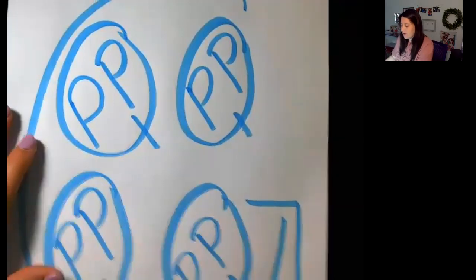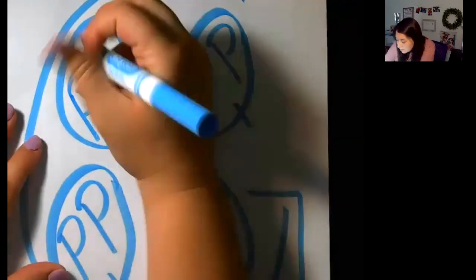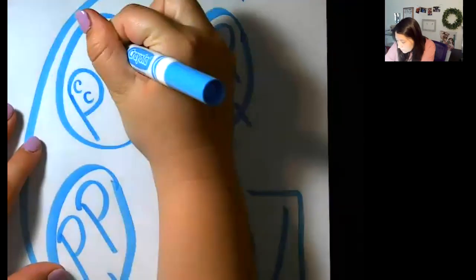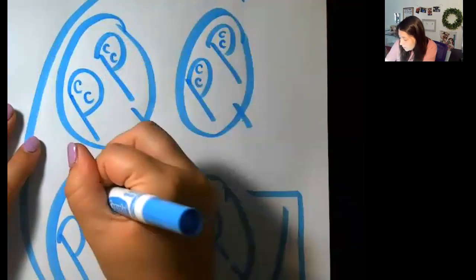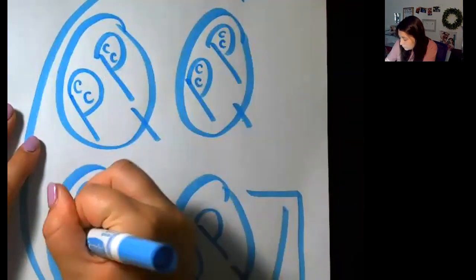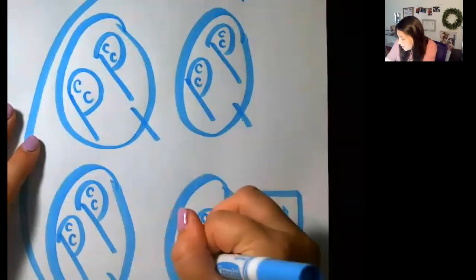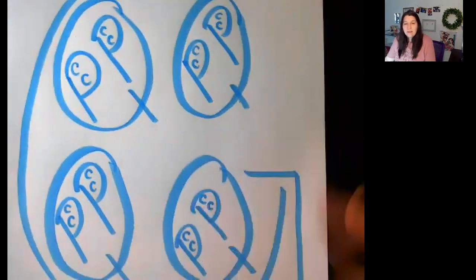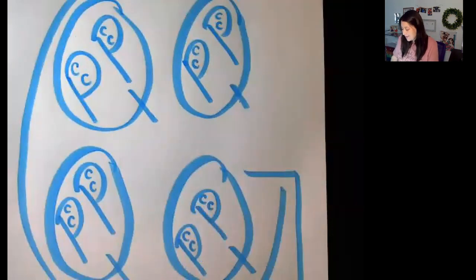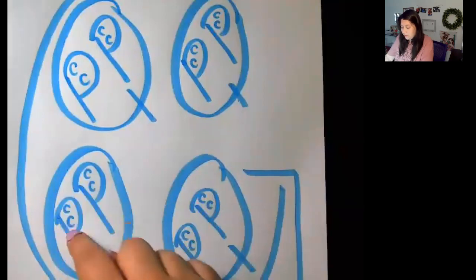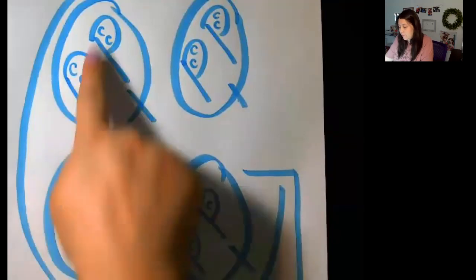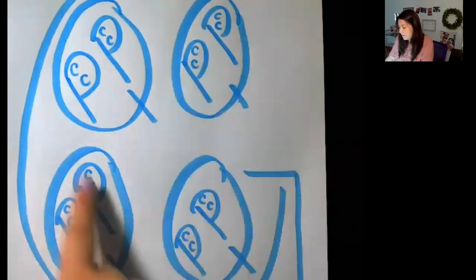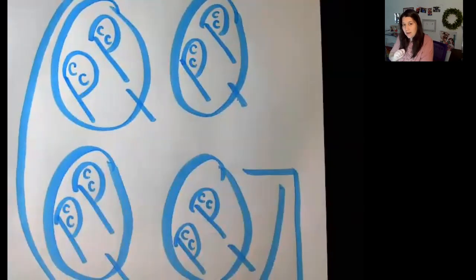I'll make a little key for this at the top. Inside of your P's you're going to draw two C's — those little C's stand for cups. There are two cups in a pint. Inside of a quart there are four cups. Inside of a gallon there are 16 cups.